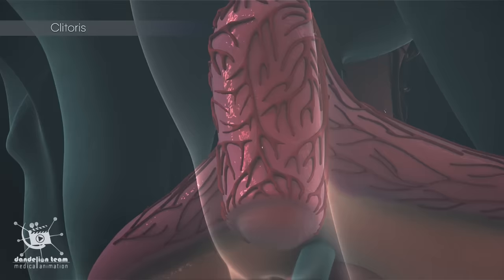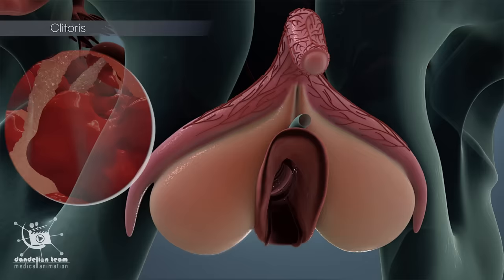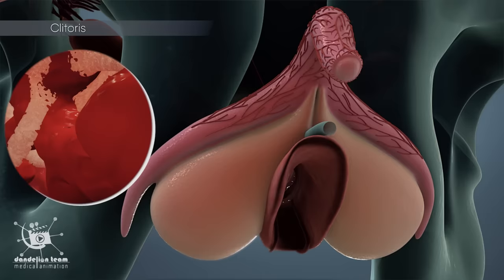The clitoris has the most nerve endings in the human body. It has legs and vestibular bulbs that wrap around the vagina. The legs and the bulbs contain erectile tissue that fills with blood and expands when sexually aroused.